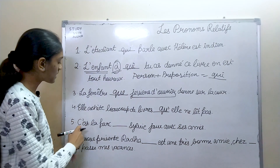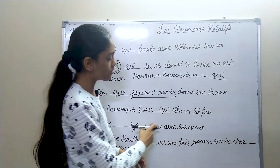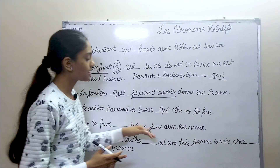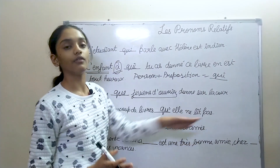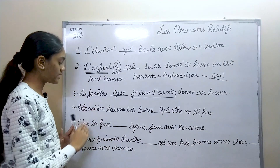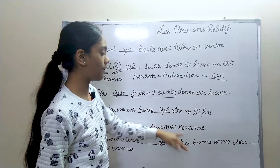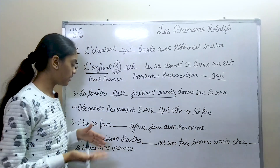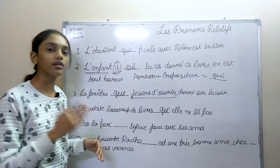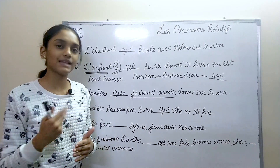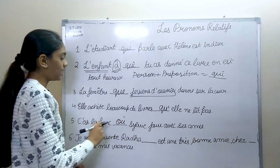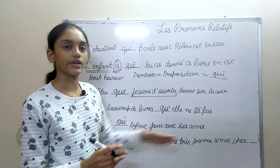Fifth: "C'est le parc ___ Sylvie joue avec ses amis." The full sentence would be "Sylvie joue avec ses amis dans le parc." Since 'dans' is a preposition and 'le parc' is a place, we use où. The answer is: "C'est le parc où Sylvie joue avec ses amis" — this is the park where Sylvie plays with her friends.